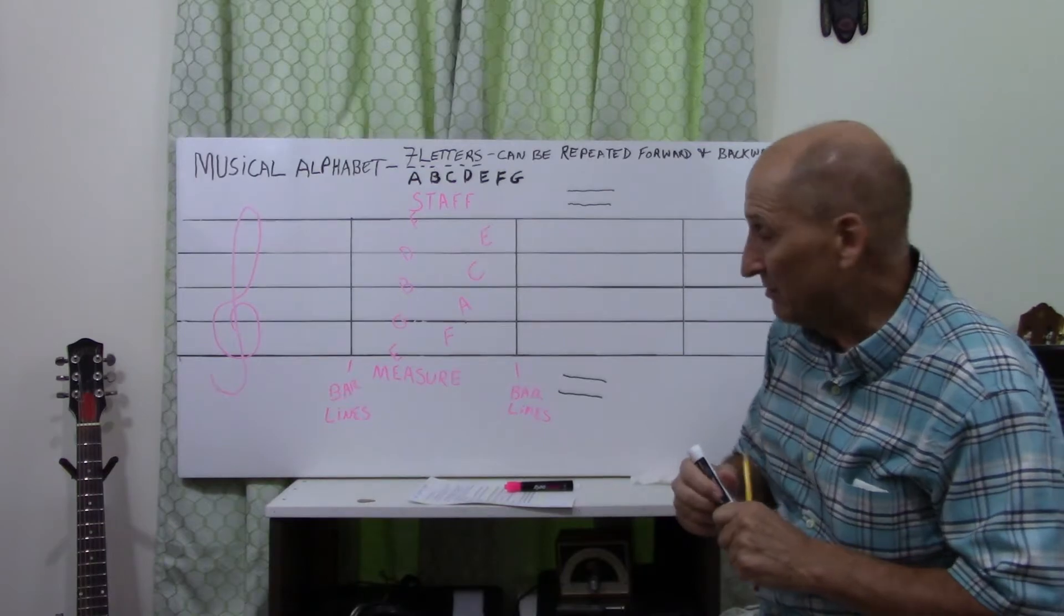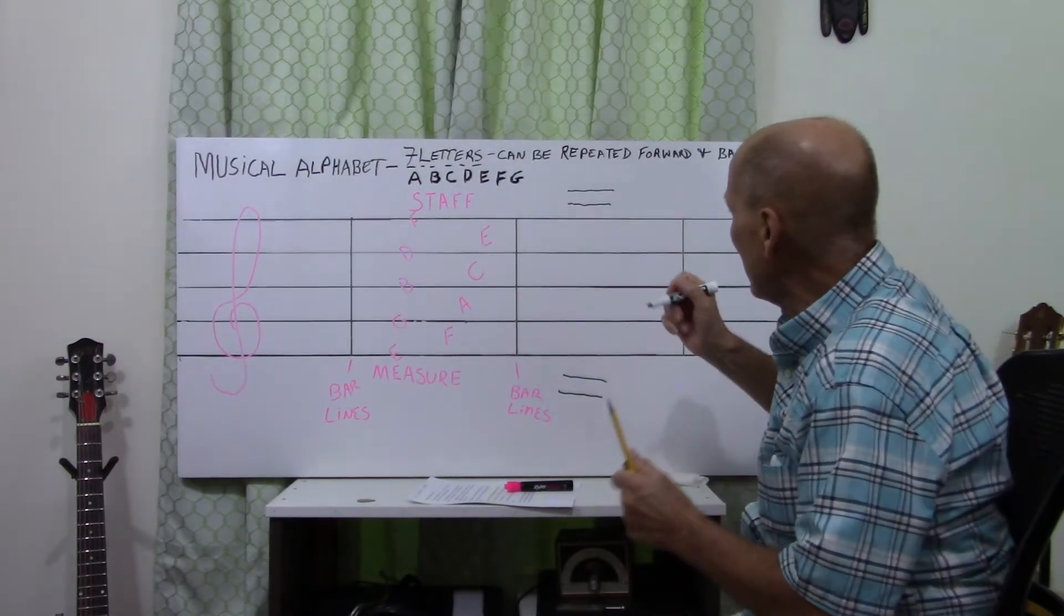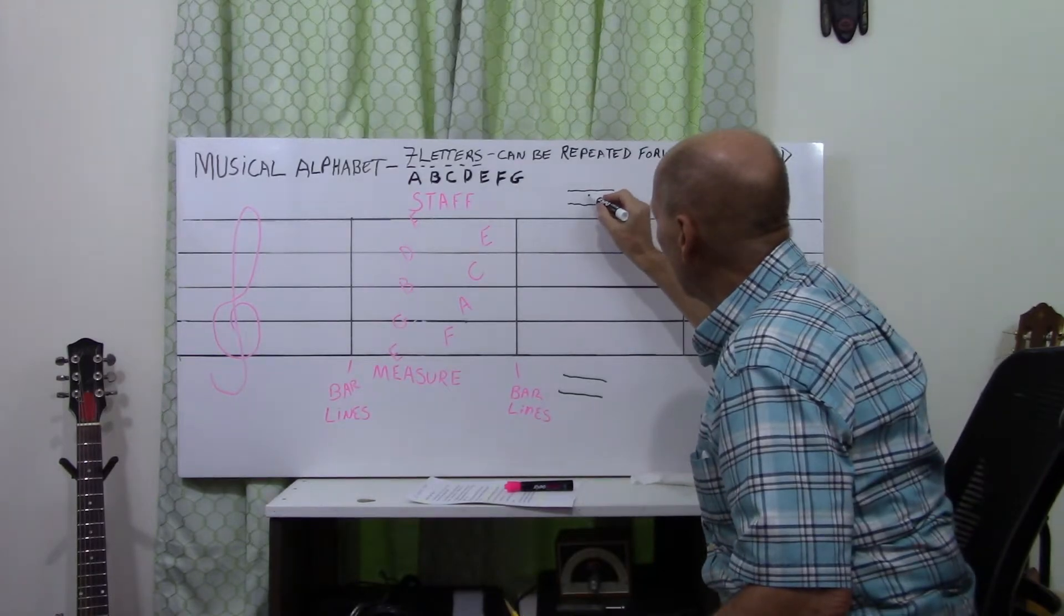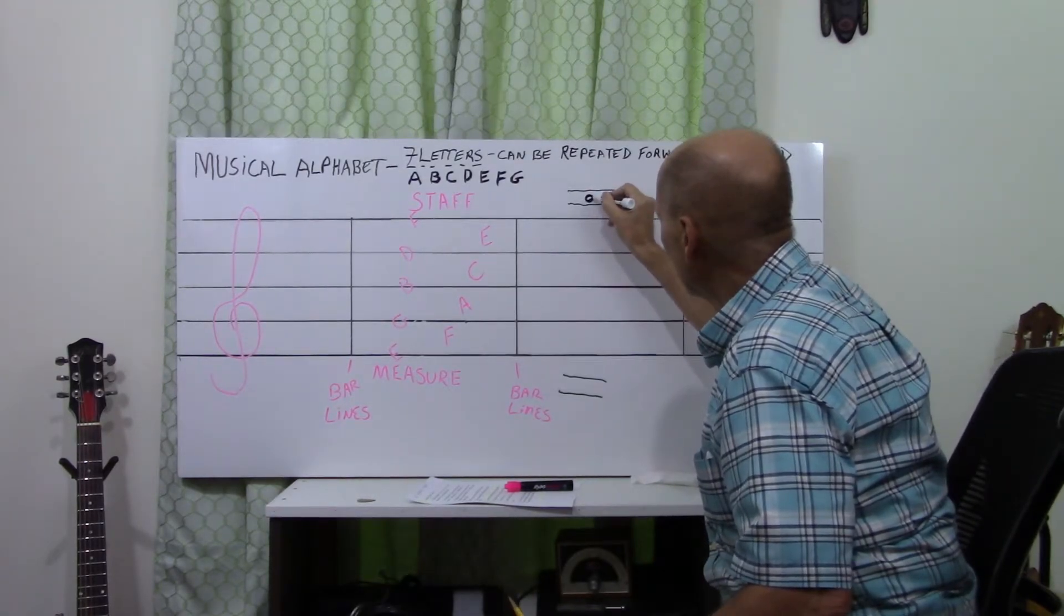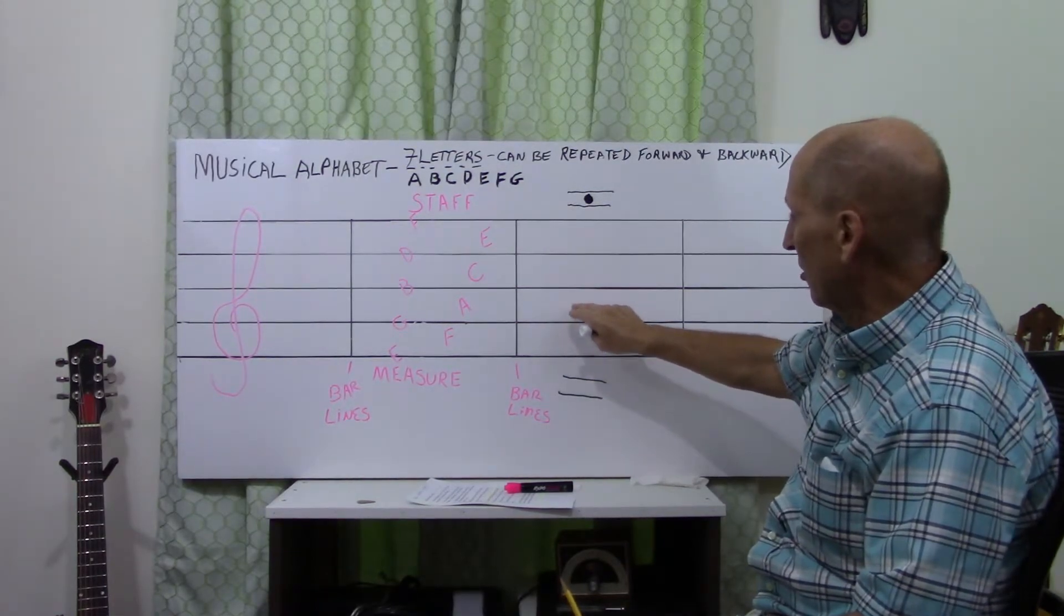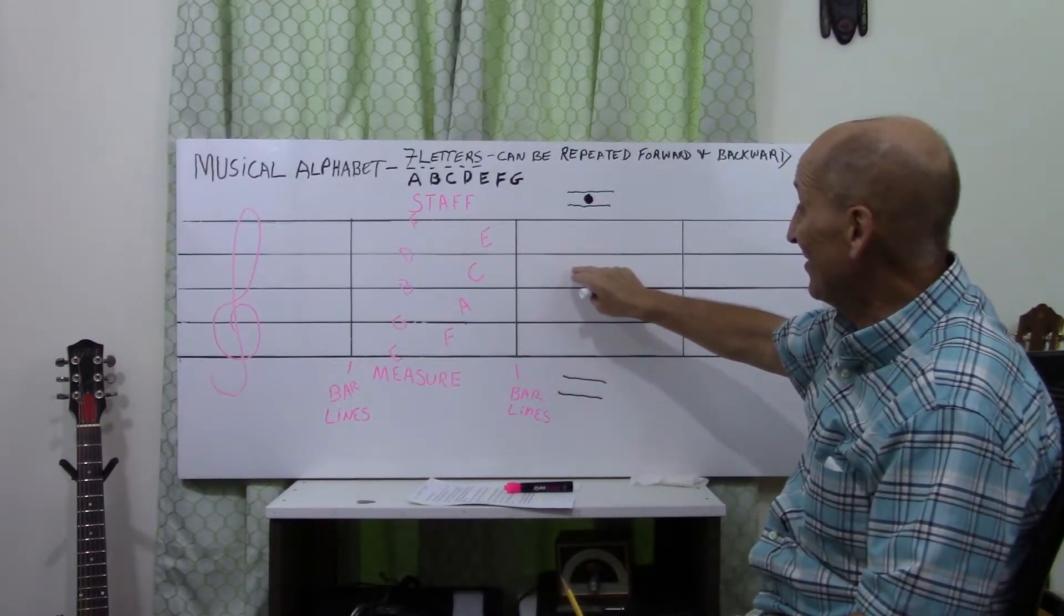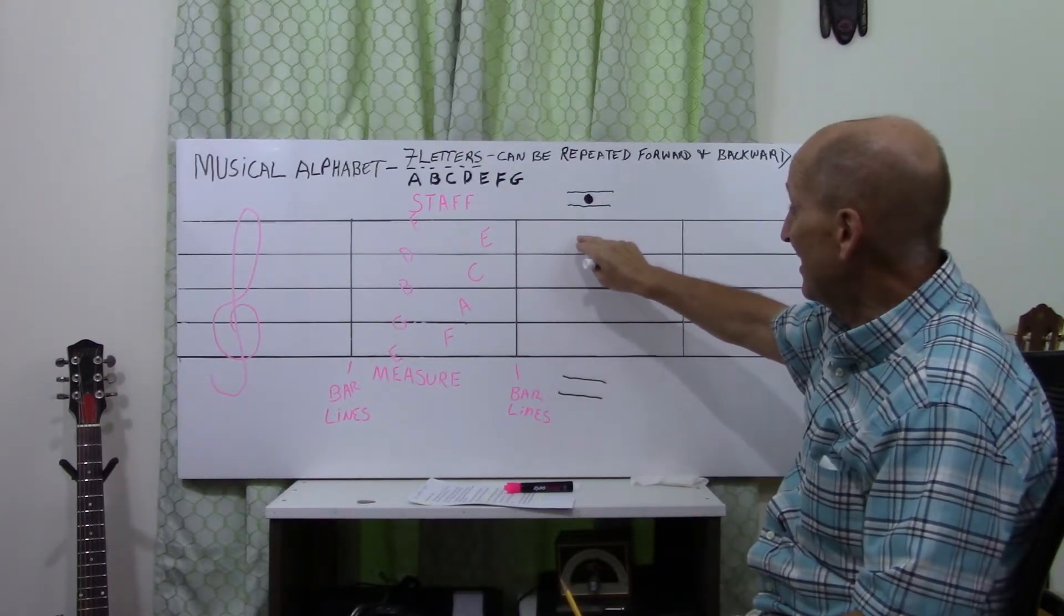We know this is G. So, if we have a note that's going to be, let's say, in here. We know this is G. We're going to go, G, A, B, C, D, E, F.